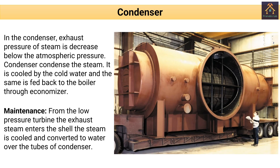Next, the condenser. In the condenser, the exhaust pressure of the steam is decreased below the atmospheric pressure. The condenser condenses the steam — it is cooled by cold water and the same is fed back to the boiler through the economizer. From the low pressure turbine, the exhaust steam enters the shell where it is cooled and converted to water over the tubes of the condenser.